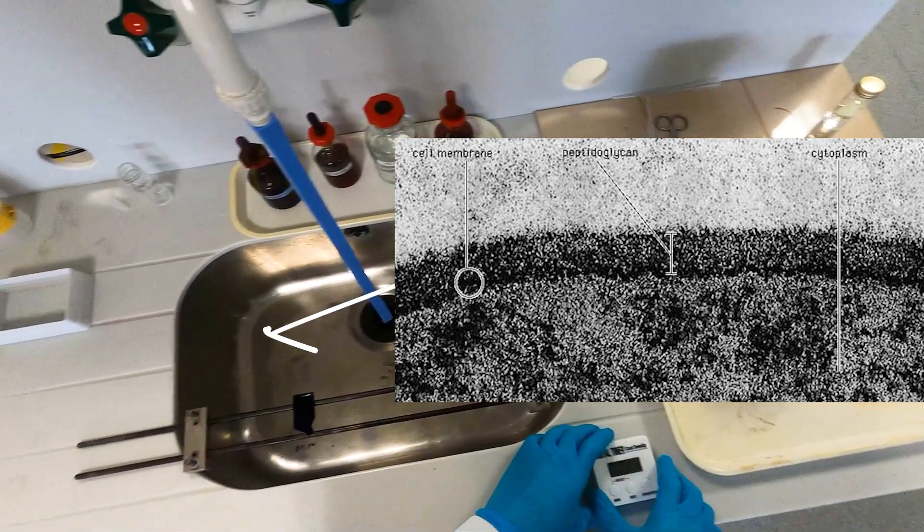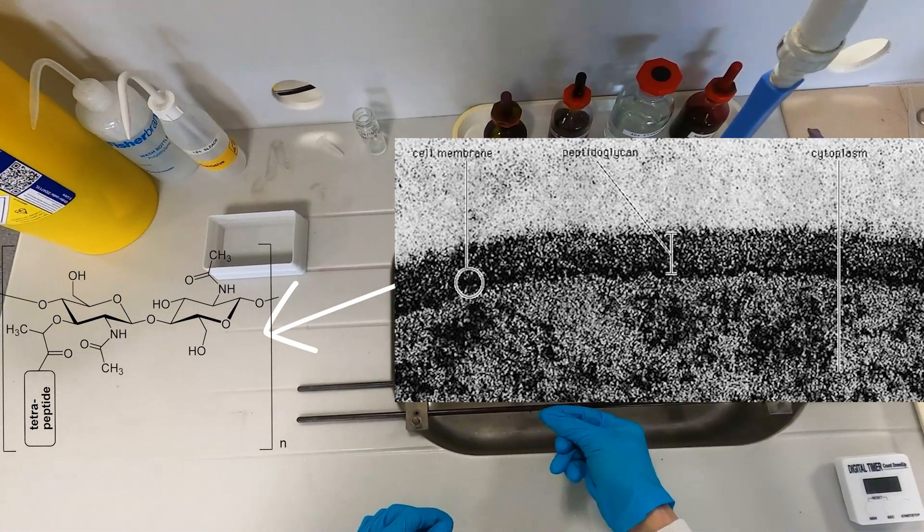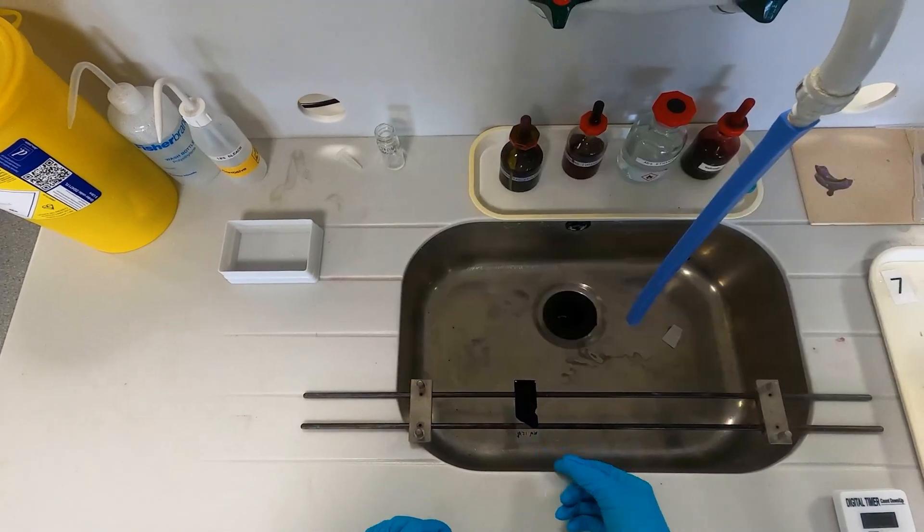The Gram stain allows us to differentiate bacteria by the components of their cell wall. Gram positives have more peptidoglycan in their cell walls than Gram negatives and therefore stain differently.